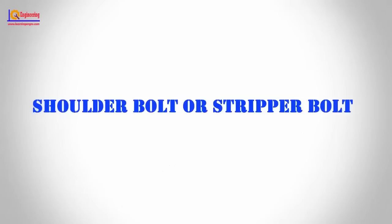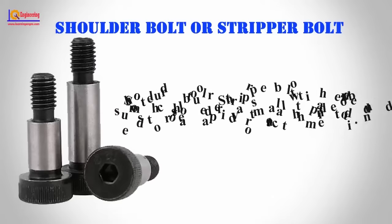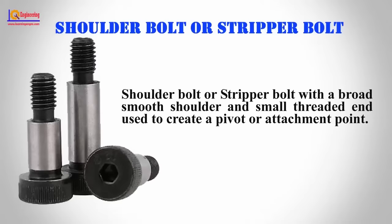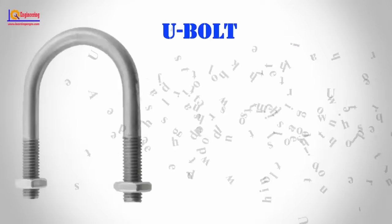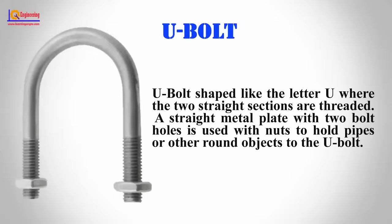Shoulder Bolt: A shoulder bolt, also called a stripper bolt, has a broad smooth shoulder and a small threaded end, used to create a pivot or attachment point.